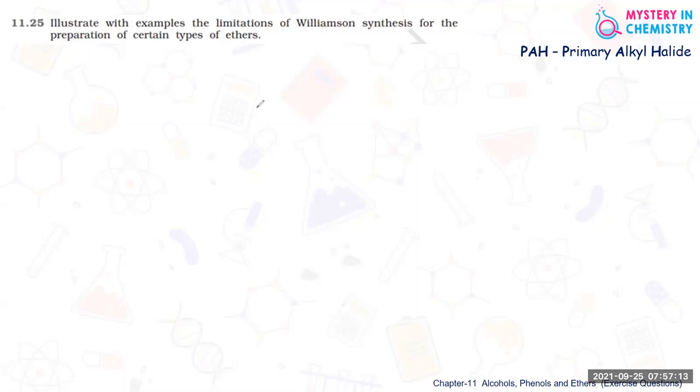Now as I said in my previous videos, Williamson synthesis can prepare any ether, but remember PAH, that is Primary Alkyl Halide, should always be primary. Then only you can prepare any ether.